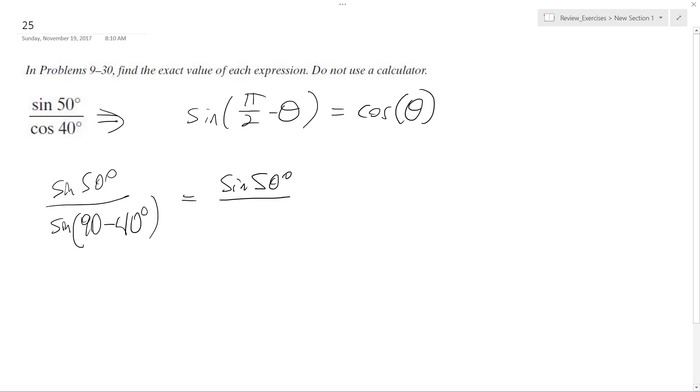So sine of 50 degrees over sine of 50 degrees, which is equal to 1. And that's it. That's all there is to it.